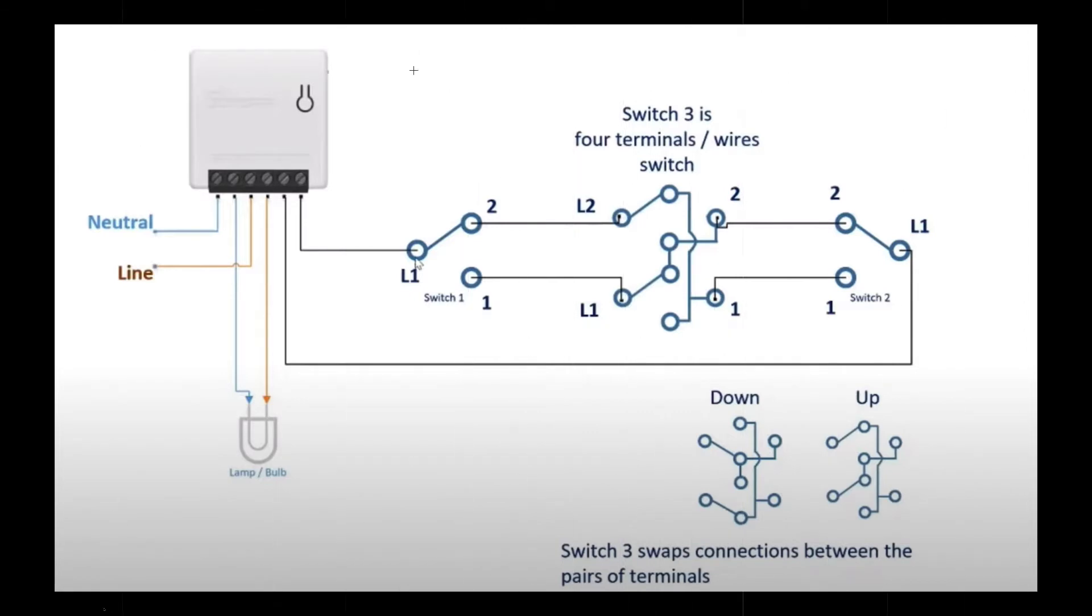For a Sonoff Mini to be connected to a four-way switch, you need the neutral, the live line coming into the third screw, the neutral coming into the second screw, and line out to the fourth screw. For S1 and S2, you need connections from one of the commons on the first switch and another common on the third switch.